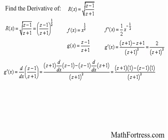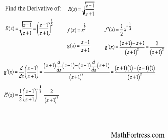Now that we have our derivatives, we can finish applying the chain rule. The derivative of r of x is going to be equal to 1 half times the quantity z minus 1 over z plus 1 raised to the power of negative 1 half times 2 over the quantity z plus 1 squared. We can distribute the negative 1 half to the numerator and denominator, and remembering that negative exponents are just reciprocals.